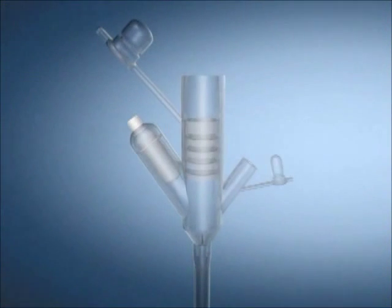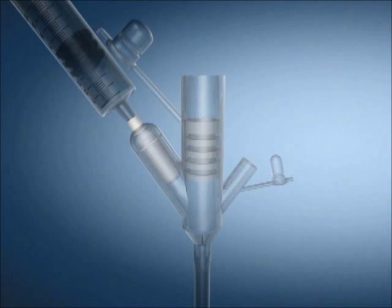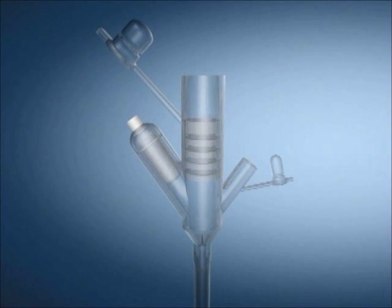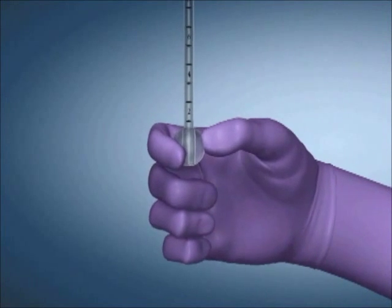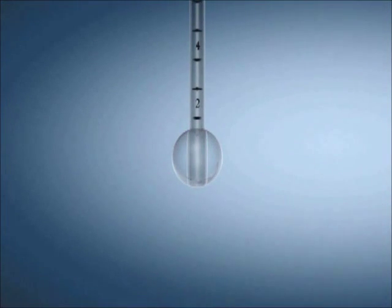Select the appropriate MIC gastrostomy feeding tube. Using a Luer slip syringe, inflate the balloon with sterile or distilled water through the balloon port. Remove the syringe and verify balloon integrity by gently squeezing the balloon to check for leaks. Visually inspect the balloon to verify symmetry.